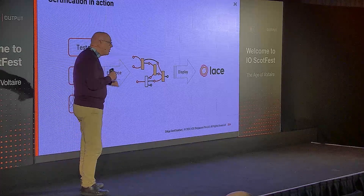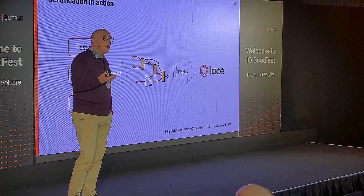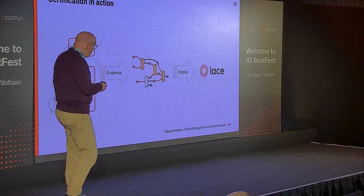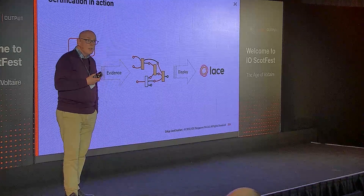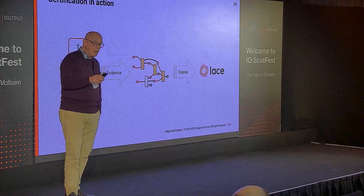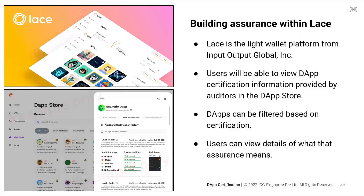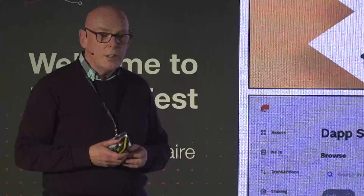That evidence can be placed on blockchain, and then anyone building a DApp store or anyone interested in a DApp can take that evidence off the chain and display it. The LACE wallet being developed will have that as a key feature. In this mock-up, you can see with this example DApp you've got a summary of the audit, what vulnerabilities were identified, and so on. A key part of the description of that DApp is to foreground this kind of assurance information.